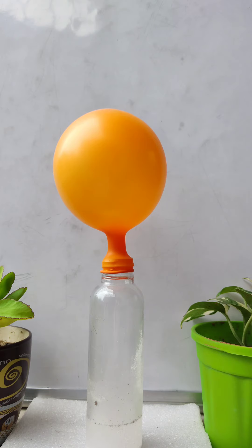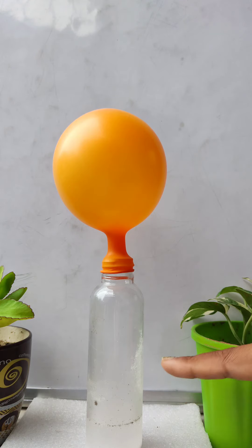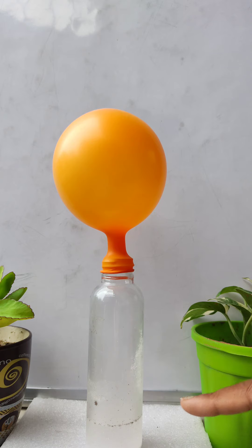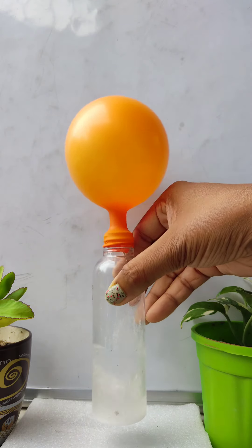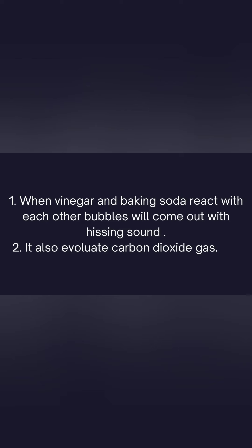This carbon dioxide gas helps the balloon to inflate. If you release this carbon dioxide gas into lime water, it will turn milky white. Baking soda mixed with vinegar produces carbon dioxide gas, water, and some other components.